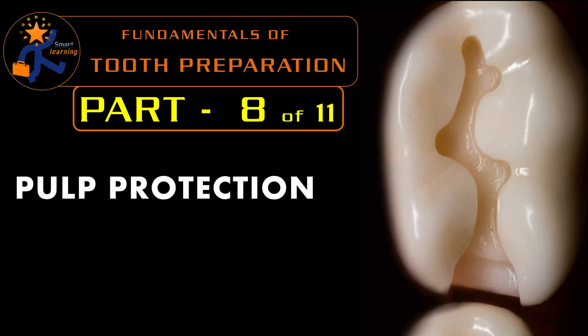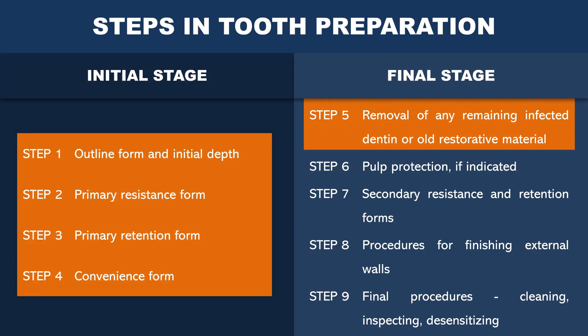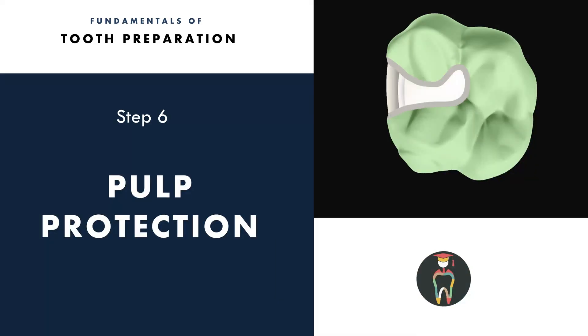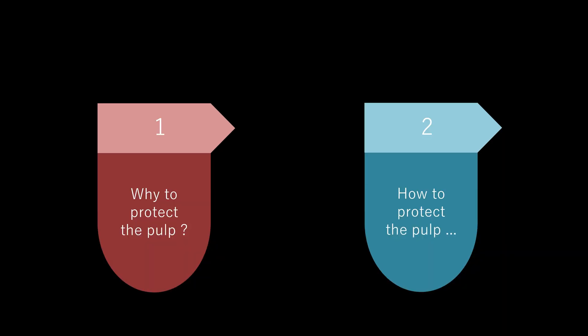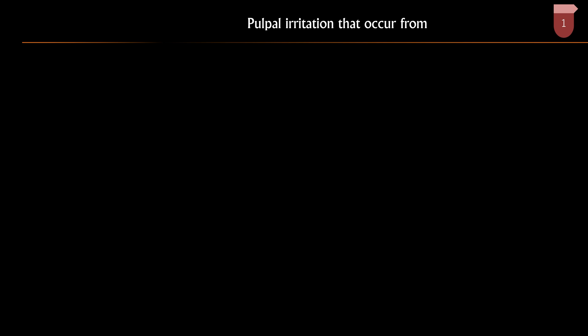In this part of the presentation we are going to see in detail about pulp protection. We have already completed the initial stage of tooth preparation and in the final stage we finish the removal of any infected dentine or old restorative material. Step 6 in tooth preparation is pulp protection, if indicated. We will cover this in two parts: why we have to protect the dental pulp, and how we are going to protect it.